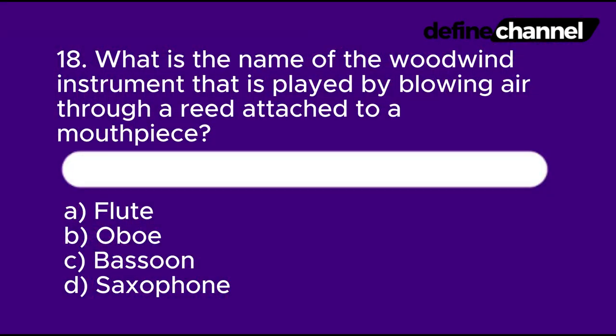Question 18: What is the name of the woodwind instrument that is played by blowing air through a reed attached to a mouthpiece? A. Flute. B. Oboe. C. Bassoon. D. Saxophone. In 10 seconds, which do you think is the correct answer?